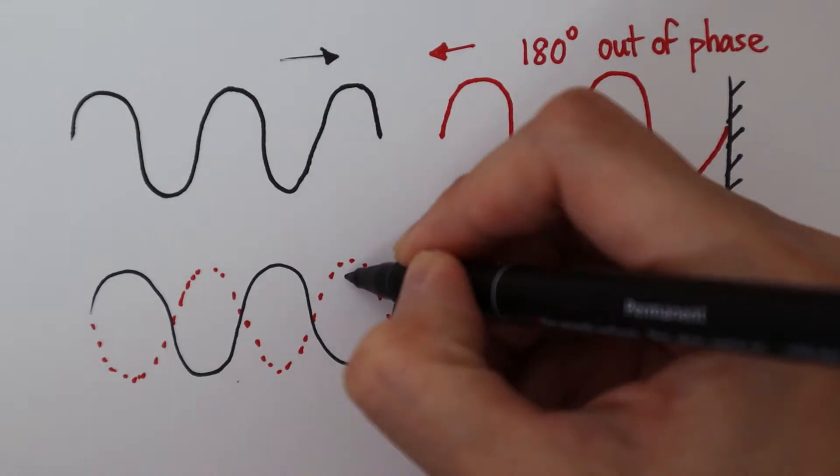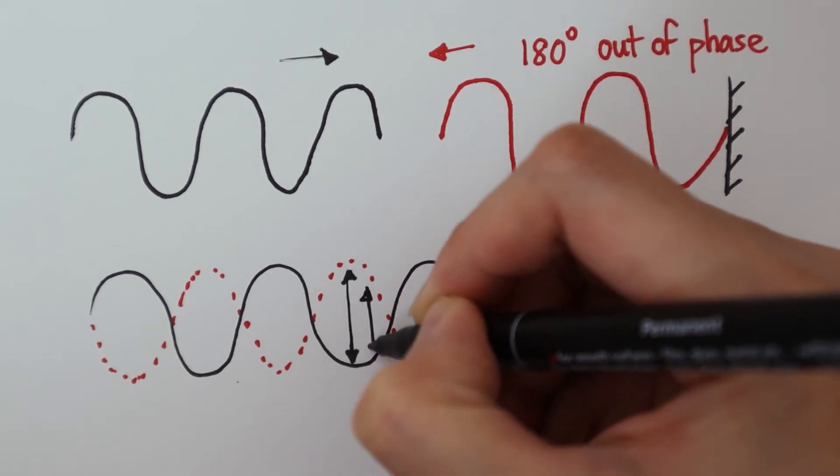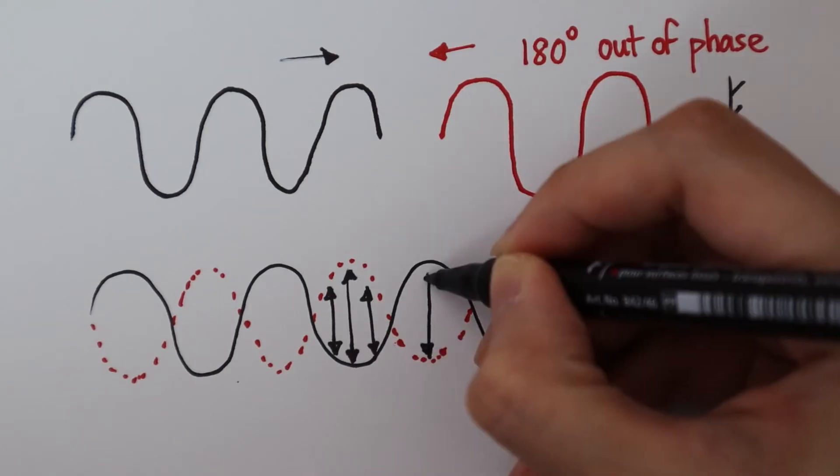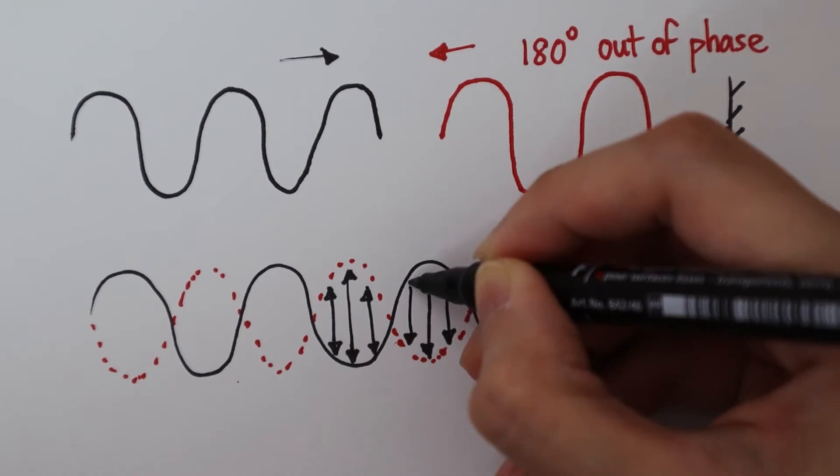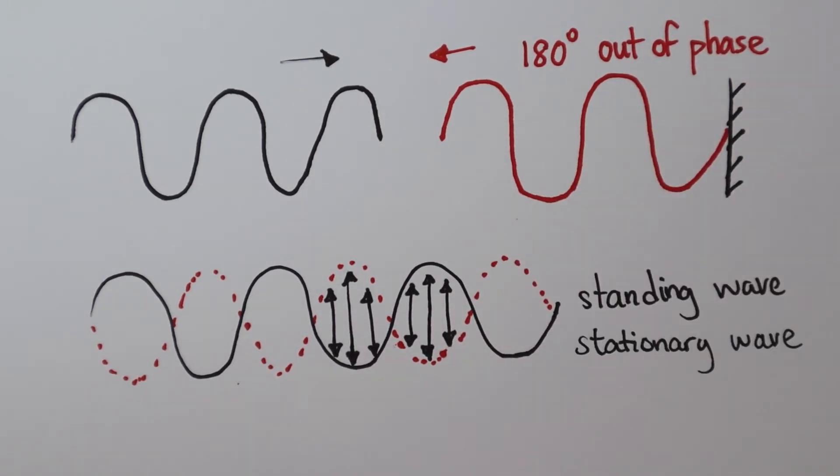But the resultant wave pattern simply looks like a wave oscillating in one place. We call this type of wave a standing wave or a stationary wave.